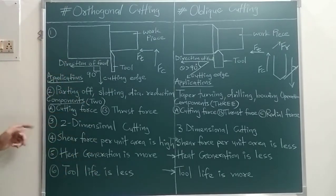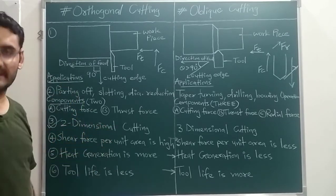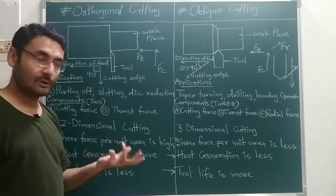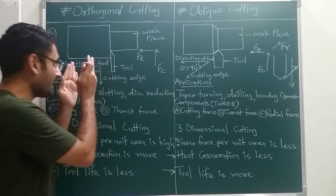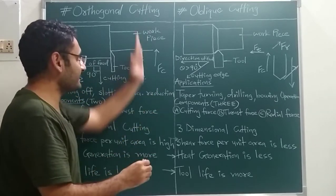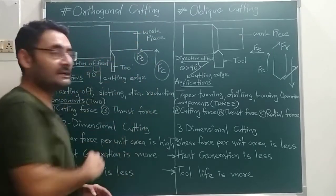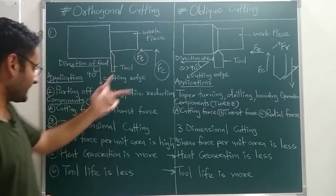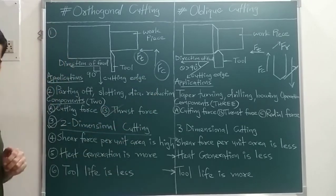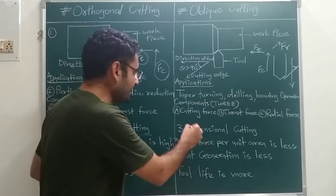The next difference is that orthogonal cutting is known as a two-dimensional cutting operation. The reason is that the force acting on the tool has two components: first is the cutting force, and second is the thrust force, which acts perpendicular to the cutting force. Because there are two components, it is called two-dimensional cutting.